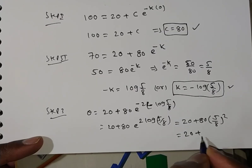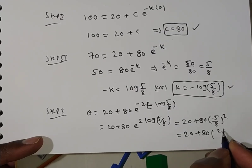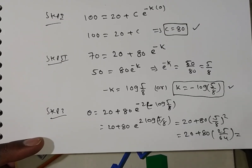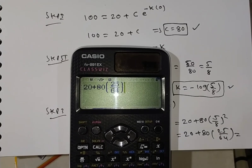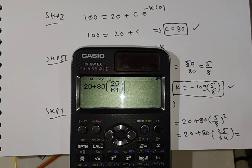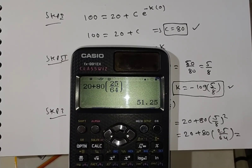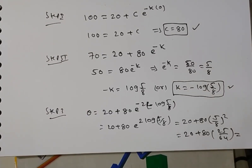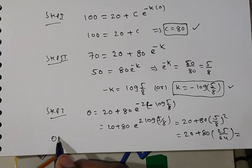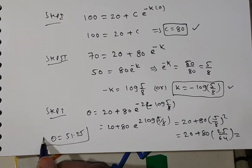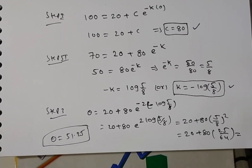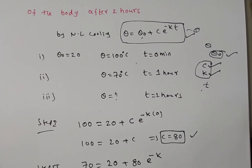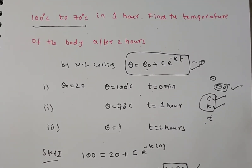Simplifying further: 80 times 25 by 64 gives 205 by 4, which equals 51.25. So at 2 hours, the temperature of the body decreases to 51.25 degree centigrade. This is the final solution. The steps are clear. Thank you for watching this video.